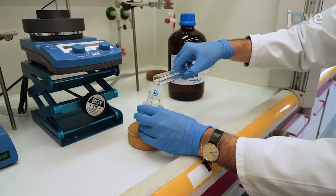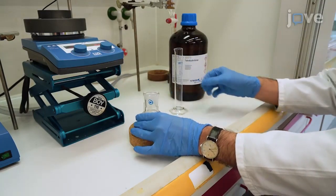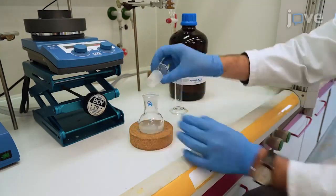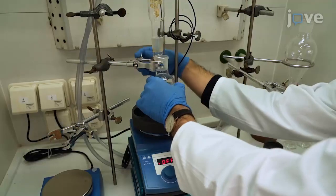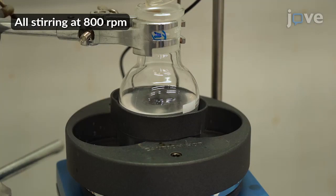To begin, place 2.46 grams of bock-protected L-glutamine and 50 milliliters of tetrahydrofuran in a 100 milliliter round-bottom flask and stir at 800 rpm for 1 minute.